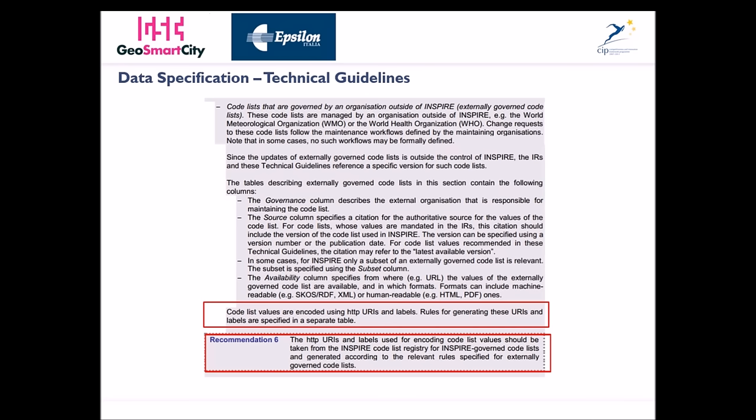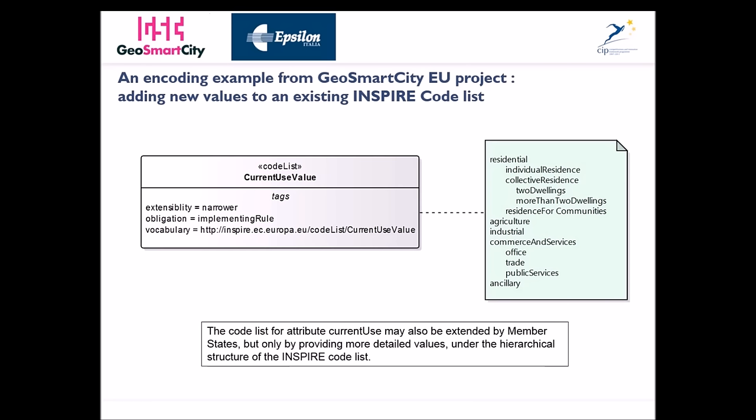Codelist values are encoded using HTTP URIs and labels, also for codelists that are governed by an organization outside of INSPIRE. Rules for generating these URIs and labels are specified by the organization itself. Recommendation 6 states that the HTTP URIs and labels used for encoding codelist values should be taken from the INSPIRE codelist registry for INSPIRE-governed codelists, and generated according to the relevant rules specified for externally governed codelists. So far the theory, and now we go with the encoding example.